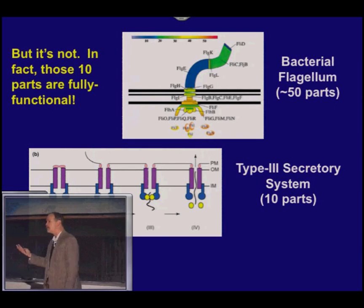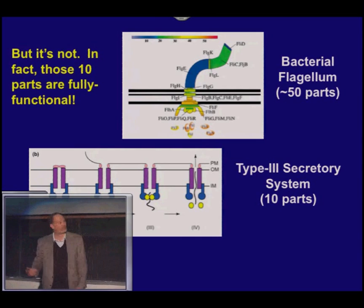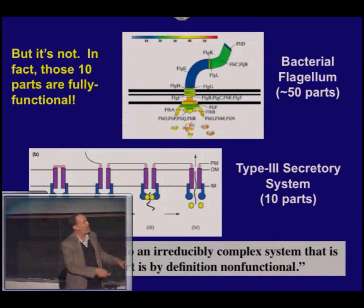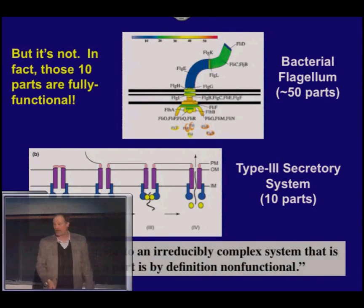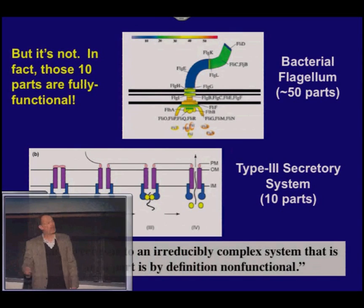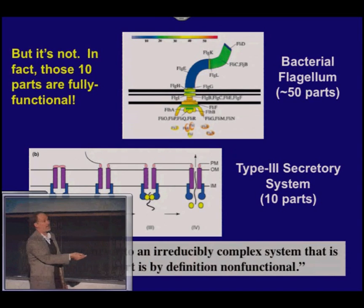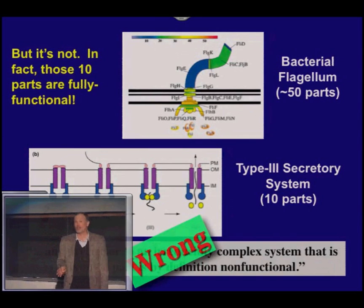The 10 proteins that make up the Type 3 Secretory System are directly homologous to the 10 proteins in the base of the bacterial flagella. They don't spin and have nothing to do with motility, but they are perfectly functional. Remember the claim: any precursor to an irreducibly complex system that is missing a part is, by definition, non-functional. This precursor is missing not one part but 40 parts, and it is perfectly functional. What that means is that statement is simply wrong.